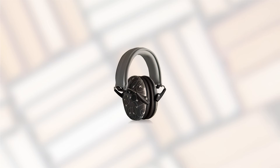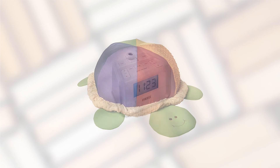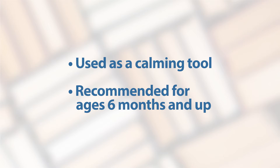Noise-reducing headphones, a sensory turtle, and a white noise machine. Each of these items can be used during overwhelming hearing situations as a calming tool and are recommended for ages 6 months and up.